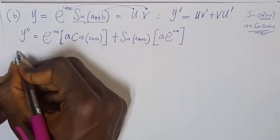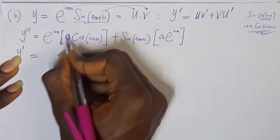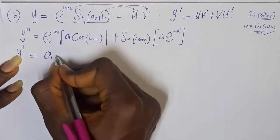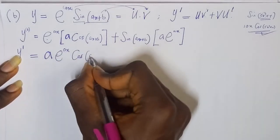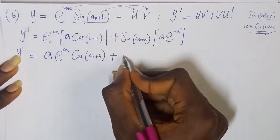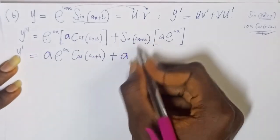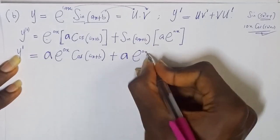Now, trivially speaking, we have y' equals to, here I have a, and I have e^(ax), followed by cosine of ax plus b. Then, the same thing here, I also have a, then I have exponential to the power of ax, then I have sine of ax plus b.